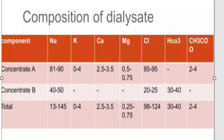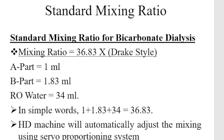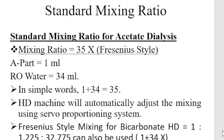The standard mixing ratio for bicarbonate dialysate is 1:1.83:34 — that is, 1 part A concentrate, 1.83 parts B concentrate, and 34 parts RO water, for a total ratio of 36.83. For acetate dialysate, the ratio was simpler: 1 part A concentrate to 34 parts RO water, giving a ratio of 1:35.